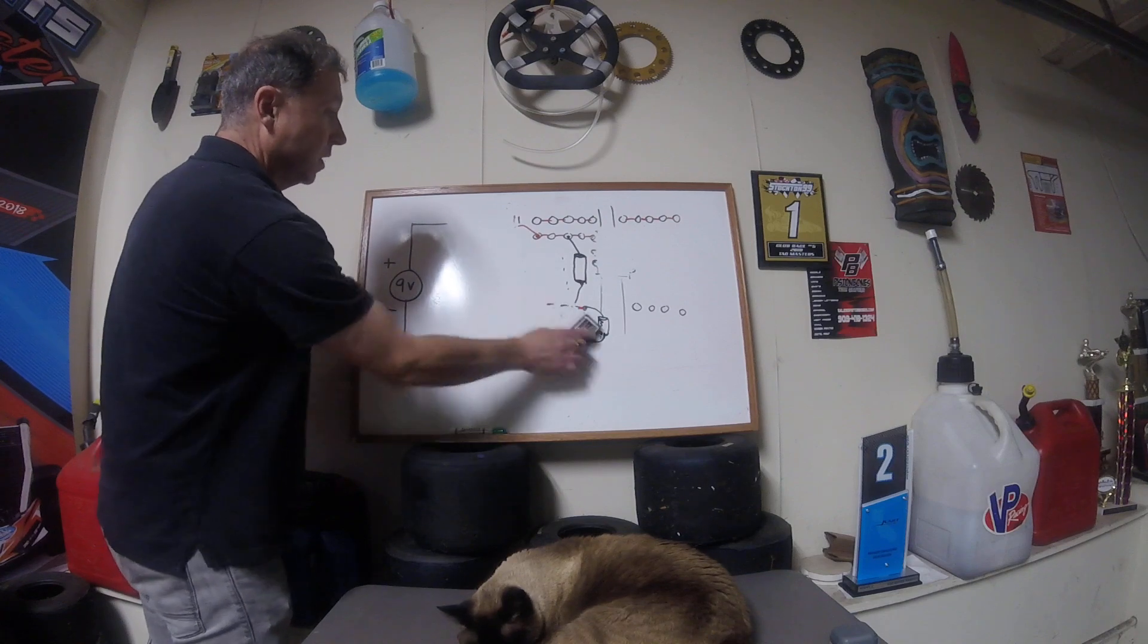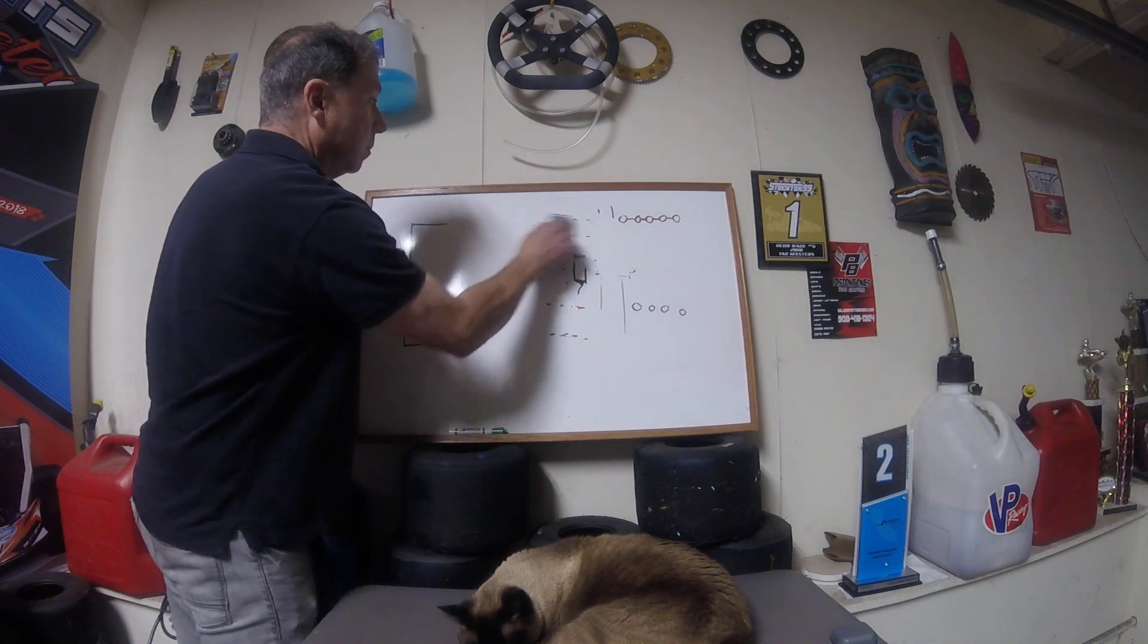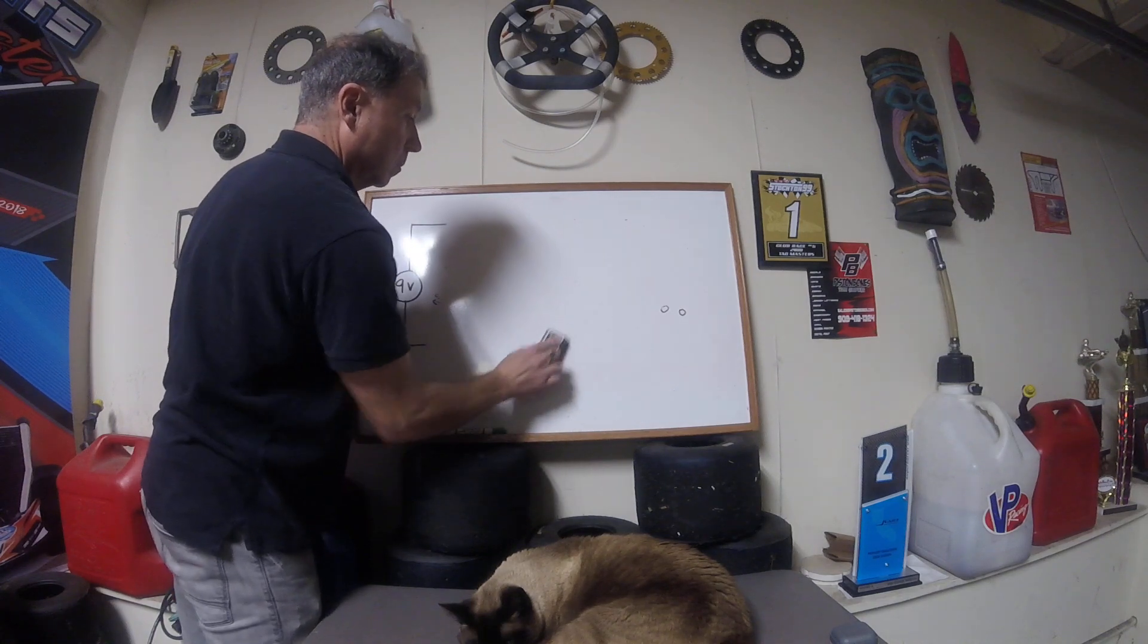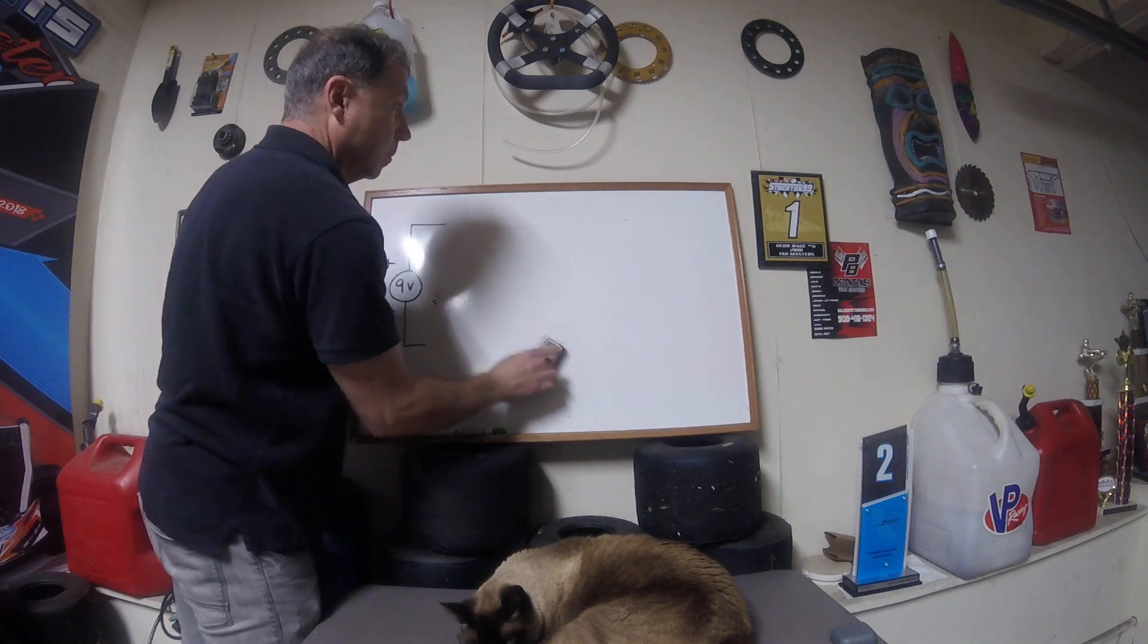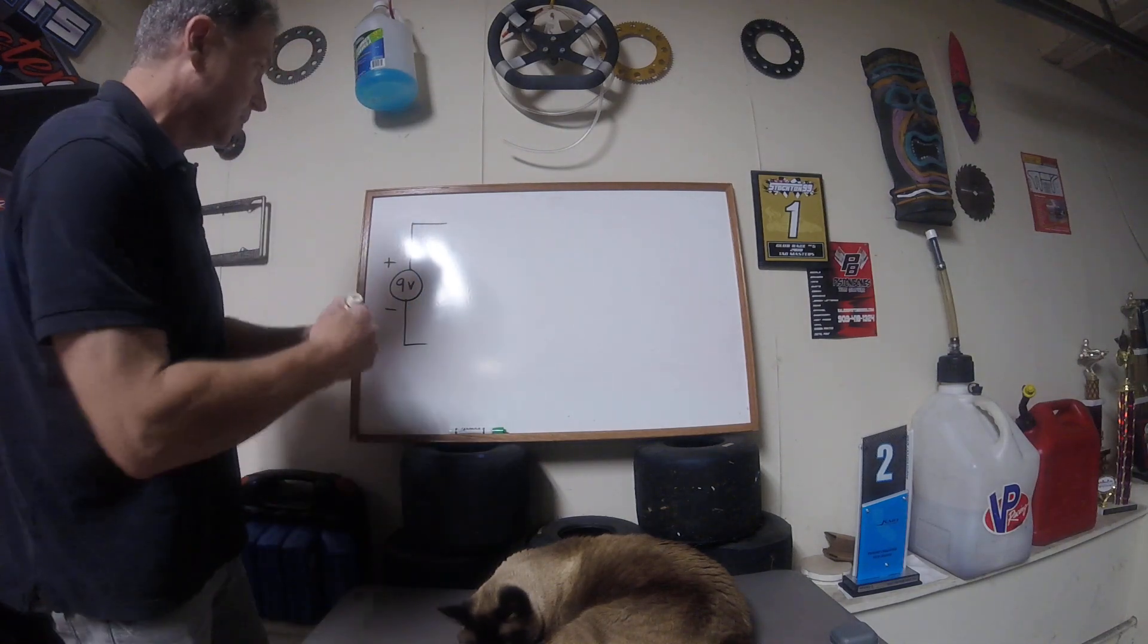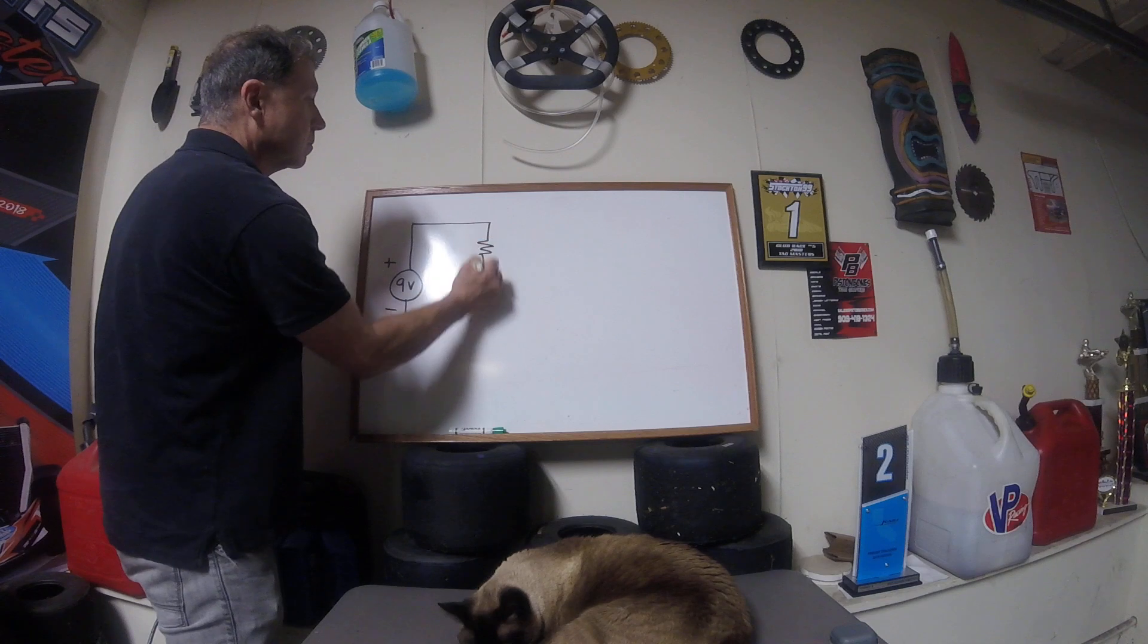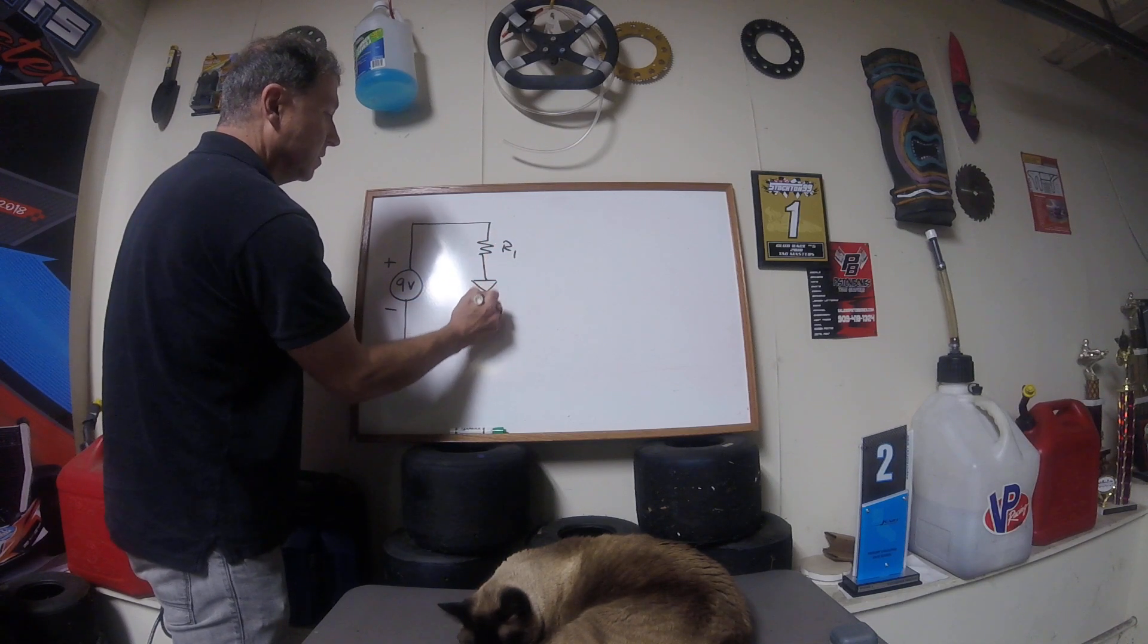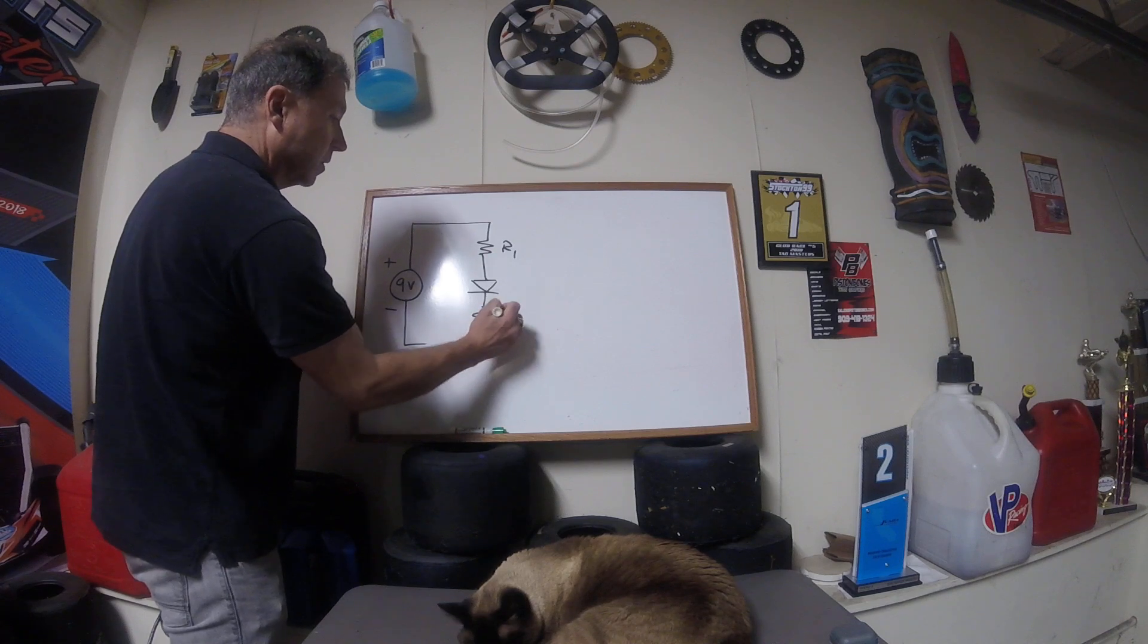Let's redraw this. So where we left off was, we had an R1, the LED in series with an R2, like so.